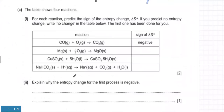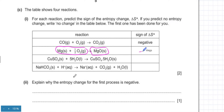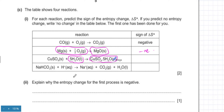For each reaction, predict the sign of the entropy change. For the first one, a gas is turning into a solid — disorder is decreasing, so the sign is negative. You can remember: whenever the moles of gas decrease, disorder decreases. For the second one, a liquid is turning into a solid — also a decrease, so that's also negative.